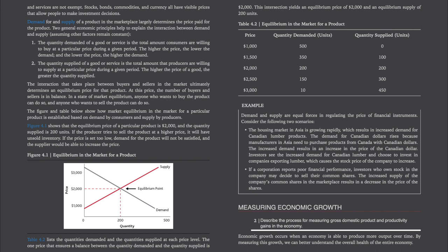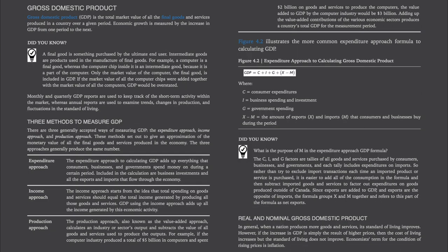Moving on to section two, measuring economic growth. Economic growth occurs when an economy is able to produce more output over time. By measuring this growth, we can better understand the overall health of the entire economy. Gross domestic product: GDP is the total market value of all the final goods and services produced in a country over a given period. Economic growth is measured by the increase in GDP from one period to the next.